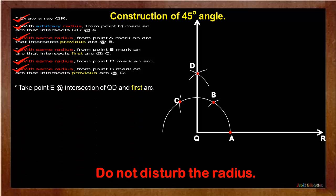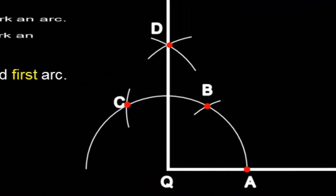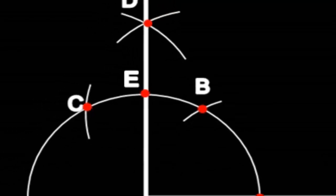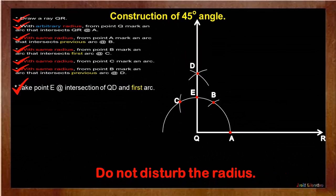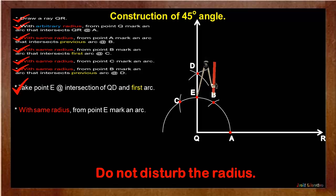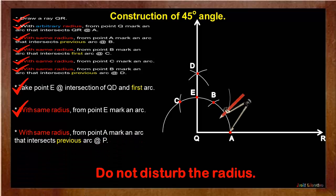Now, take point E at the intersection of QD and first arc. Then, with same radius from point E, mark an arc that intersects previous arc at point P.